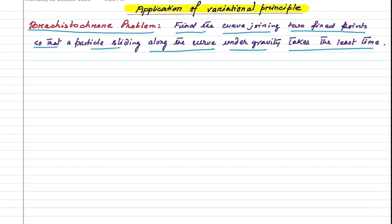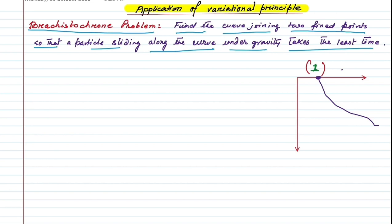Suppose a particle is falling from position 1 (higher position) to position 2 along a curve. As shown in the figure, the particle moves along this curve falling down to position 2, traveling with some velocity V.